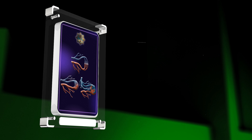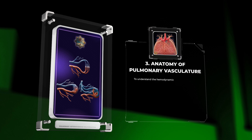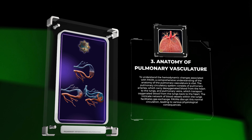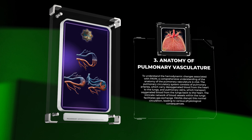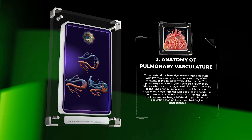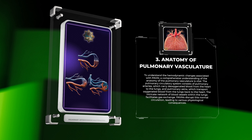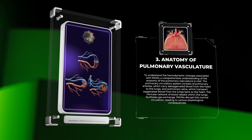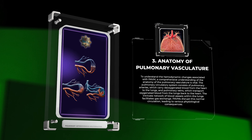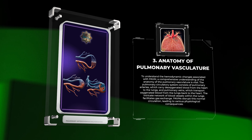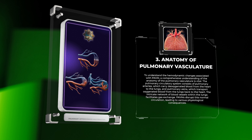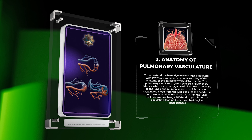To understand the hemodynamic changes associated with PAVM, a comprehensive understanding of the anatomy of the pulmonary vasculature is vital. The pulmonary circulatory system consists of pulmonary arteries, which carry deoxygenated blood from the heart to the lungs, and pulmonary veins, which transport oxygenated blood from the lungs back to the heart. The intricate network of blood vessels within the lungs facilitates gas exchange. PAVMs disrupt this normal circulation, leading to various physiological consequences.